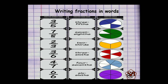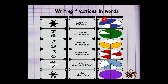Writing the fractions in words. When we write the fraction in words, we use ordinal numbers for the denominator. For example, here the numerator is 3 and denominator is 5, so this fraction will be named as 3 fifths — represented in the given figure as total parts 5 and shaded parts 3. Next one, 7 by 8, will be written as 7 eighths.